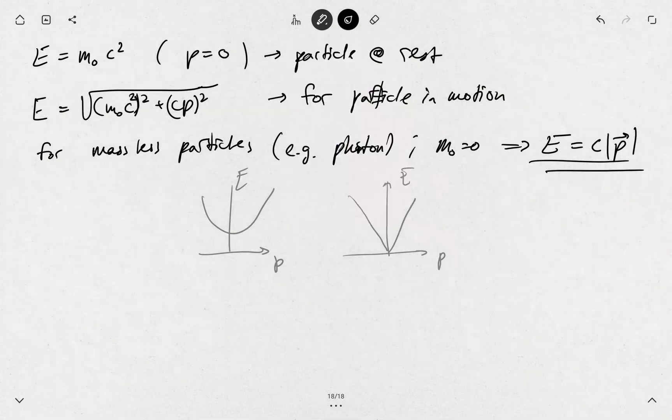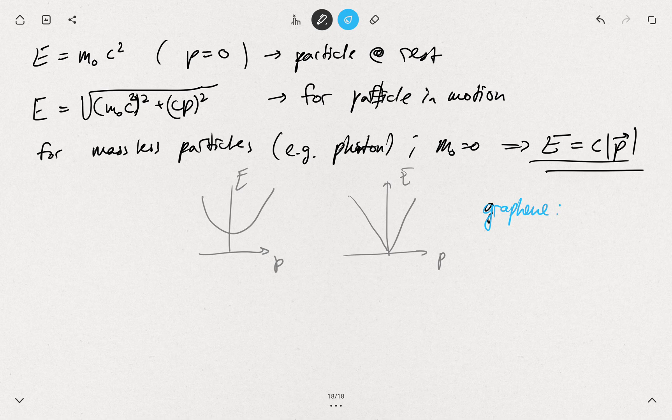If you continue this analogy further, in graphene we can also say that the mass is zero.